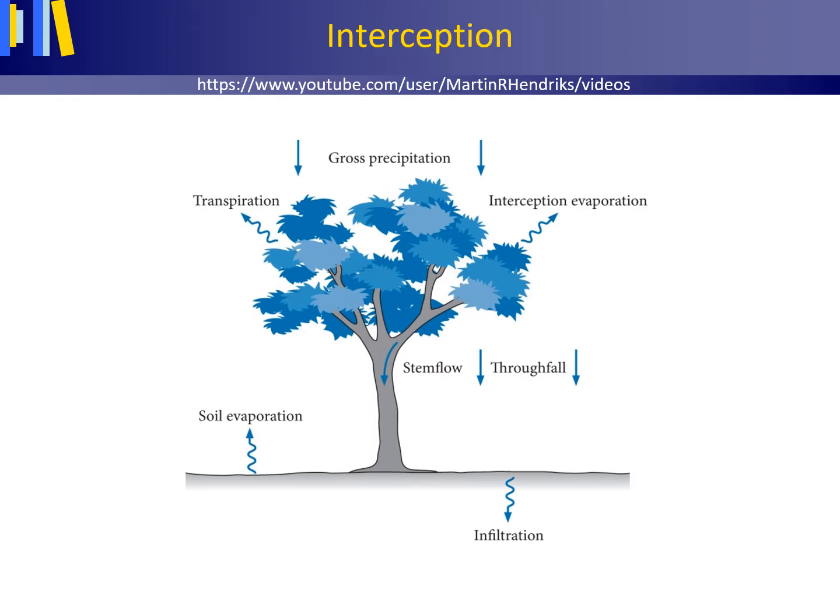Precipitation is the process whereby water particles, both liquid — rain — and solid — snow and hail — fall from the atmosphere onto the Earth's surface, and thus on land or water.